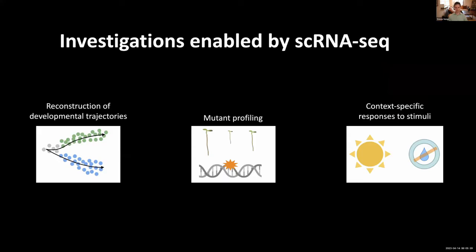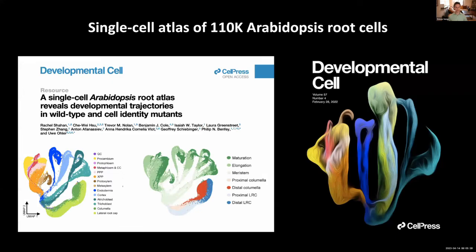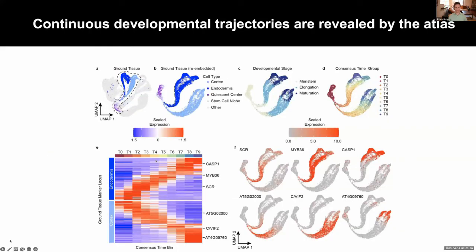I'm not going to spend a lot of time on our own research today, but I want to give you a little flavor of what we do. The first example is an effort led by Rachel Shahan and Choway Shu, where we produced a large single cell atlas of the Arabidopsis root spanning more than 110,000 cells. This allowed us to capture both the complement of cell types present in the root as well as their developmental progression from meristem to elongation and maturation zone. We can reveal continuous developmental trajectories at high resolution — for example, the endodermis and cortex share a common stem cell and we can see nice waves of gene expression including known regulators such as Scarecrow, MIB36, and CASP1.